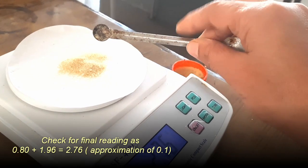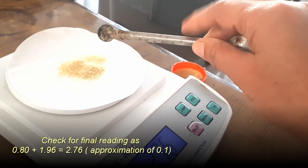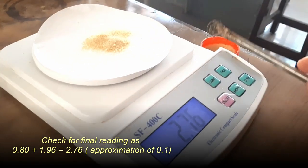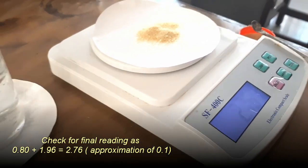This is 2.76 grams, so this is almost done. We had 0.8 and 0.81; it was shuffling between the two. So now this is 2.76, which is the required weight to make the solution.